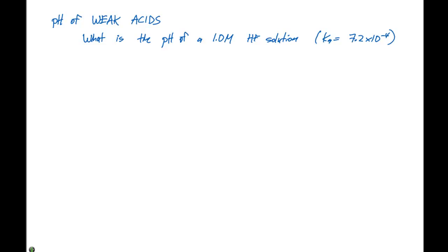In the last video we discussed pH of strong acids. And now we're going to look and see how things change when we determine the pH of weak acids. Here we're asked, what is the pH of a 1.0 molar HF solution, which has a Ka of 7.2 times 10 to the minus 4.